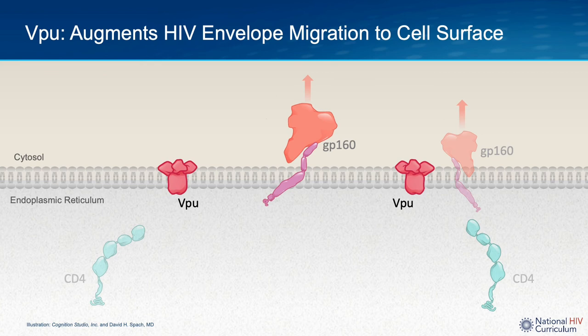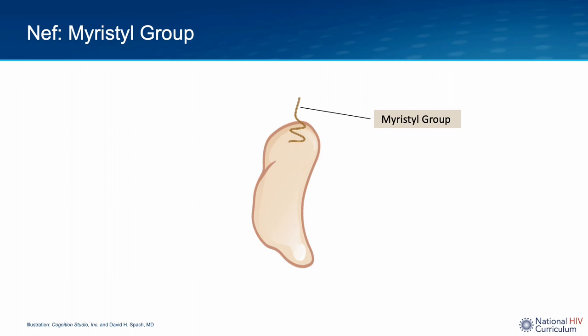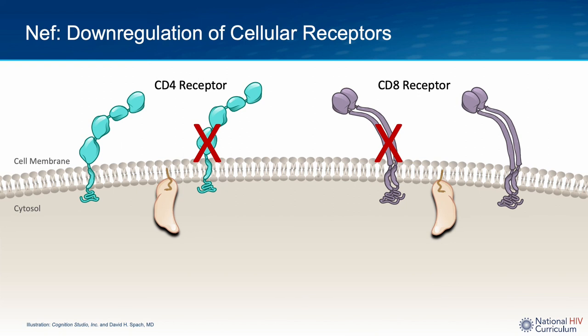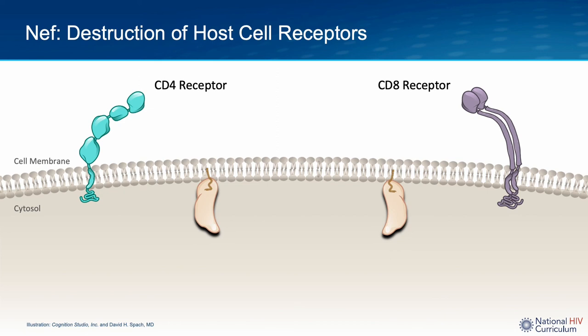The last of the HIV accessory proteins to discuss is NEF. The name NEF, or Negative Regulatory Factor, was originally derived from the mistaken concept that this protein was a negative factor for HIV; a more recent understanding is that NEF enhances HIV replication. NEF has a myristoyl group that helps anchor it to membranes. The main role of NEF is to downregulate the expression of multiple cellular receptors, including CD4 and CD8 receptors. Binding of NEF to these receptors at the plasma membrane triggers a cascade of reactions that result in the internalization and destruction of these receptors, which benefits HIV.